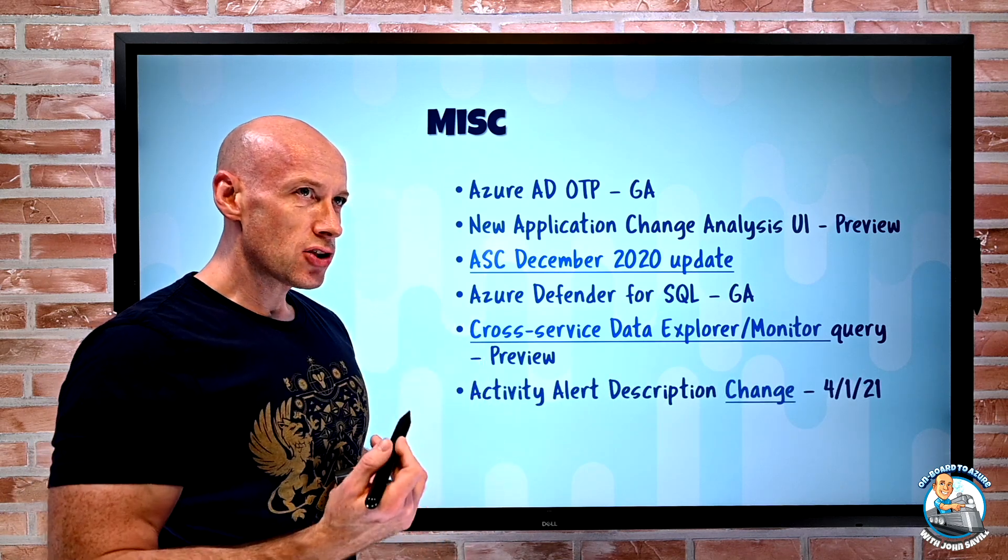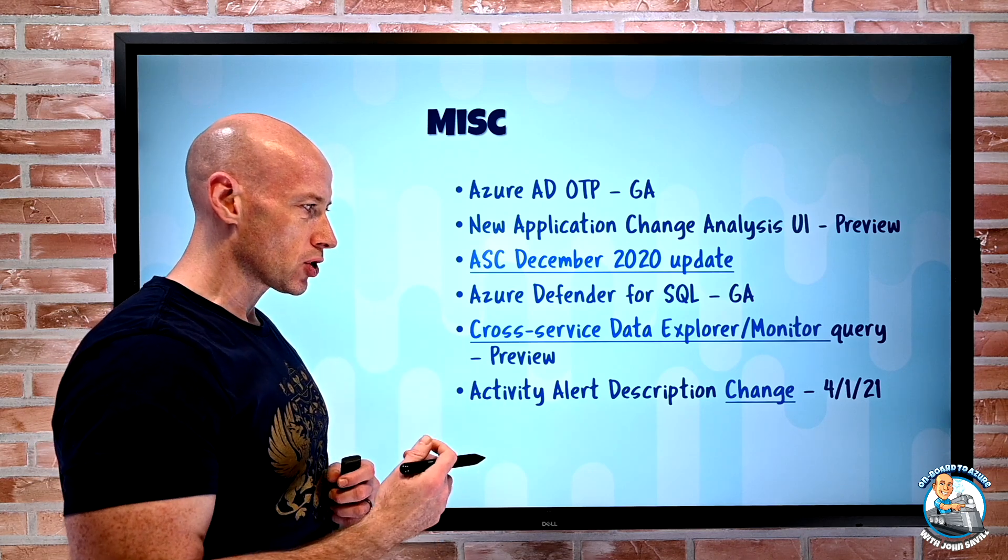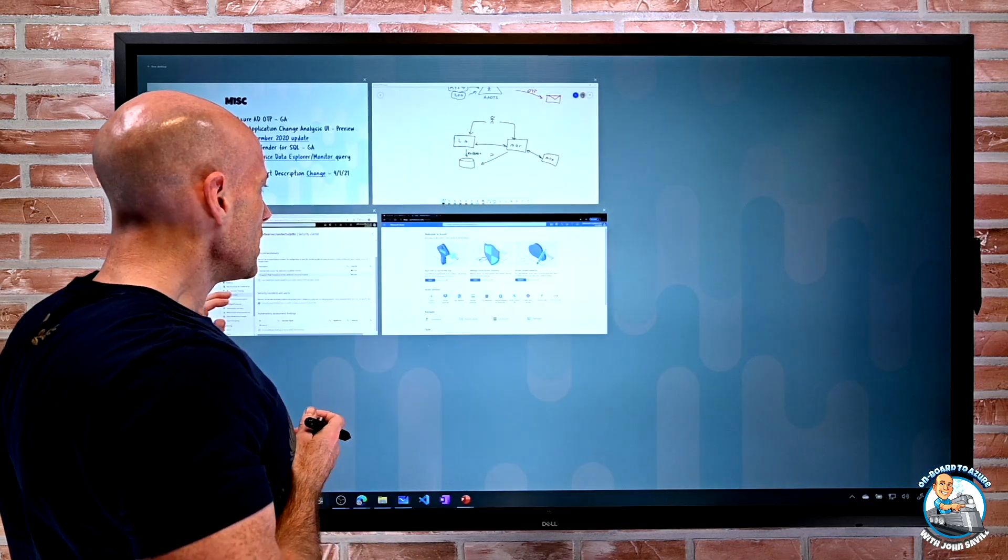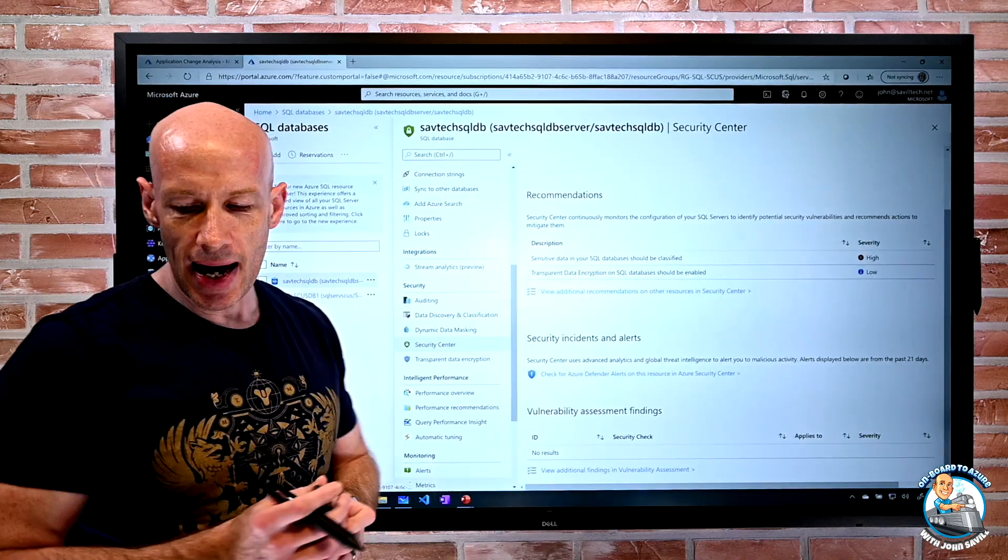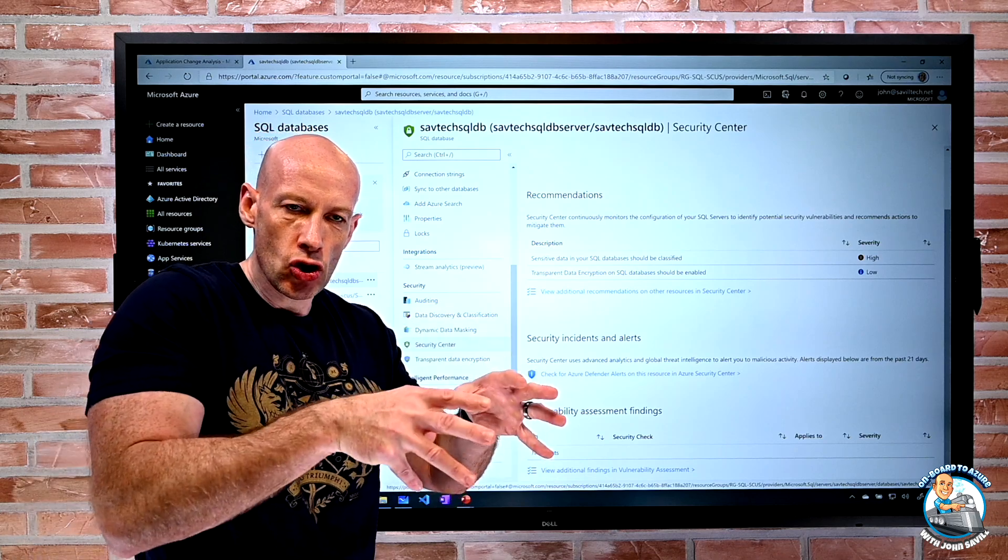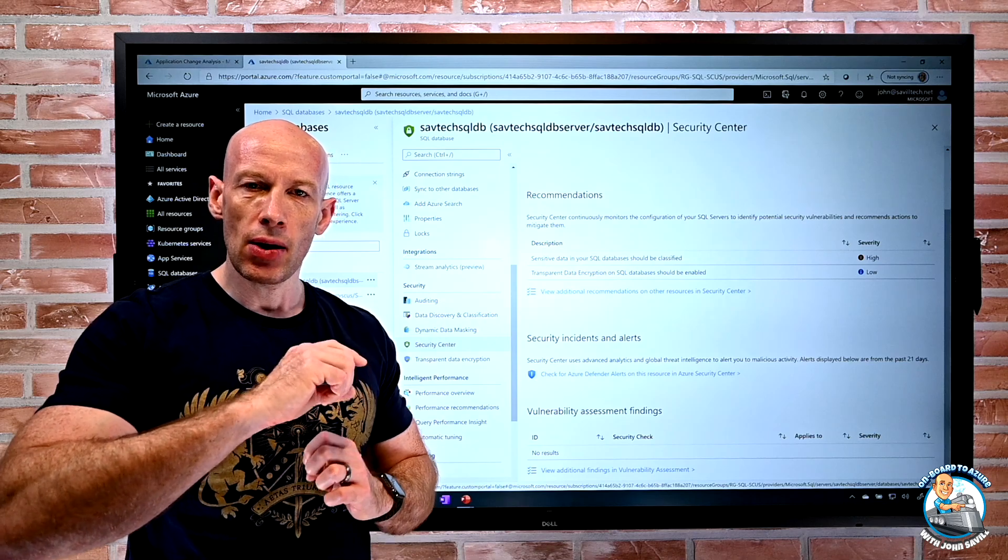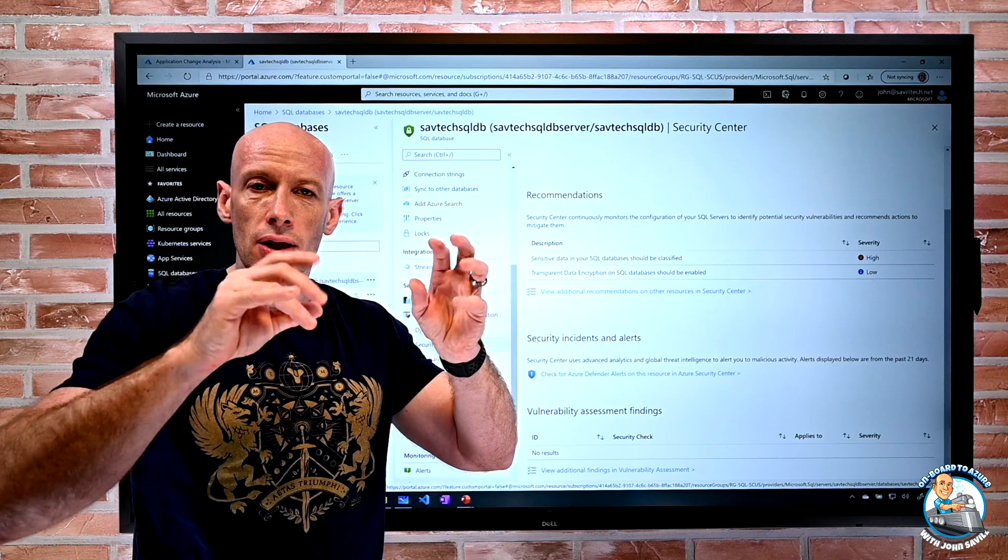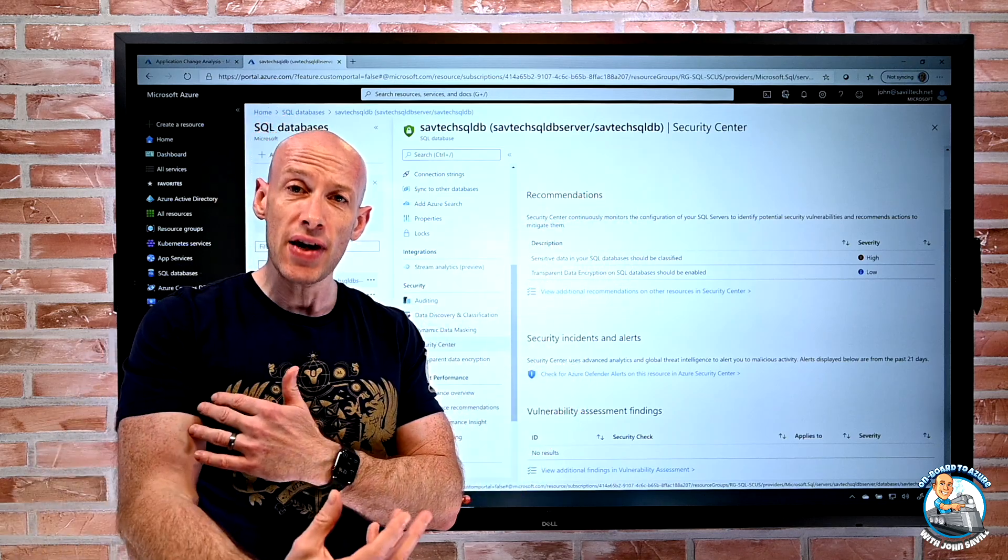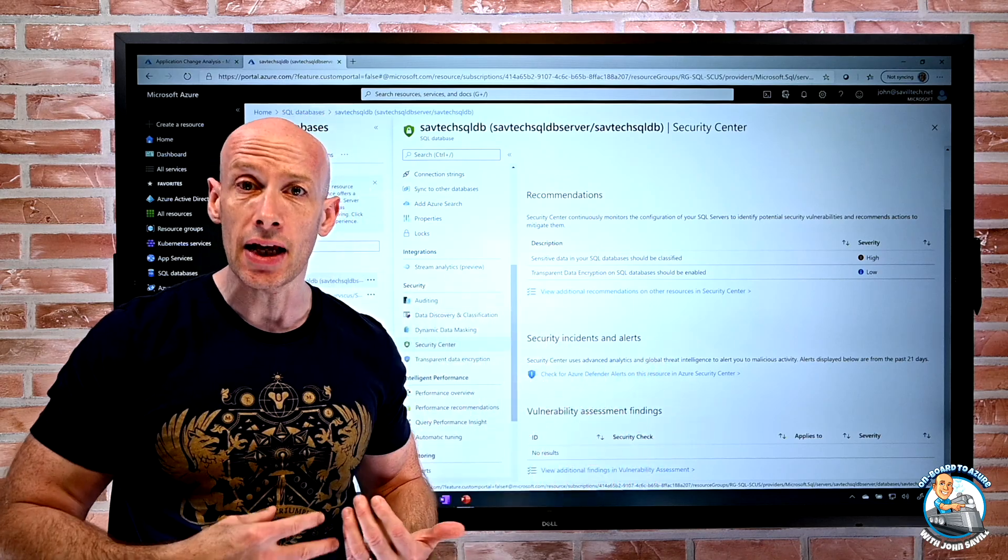There's a change coming to activity alerts, and it's all about the description. And I'll show you what it looks like today. And essentially, it boils down to in the activity log, today the description is of the actual alert. What's changing is in the description, it will actually be the alert definition description, then there'll be a new separate field for the actual description of the event that triggered the alert.